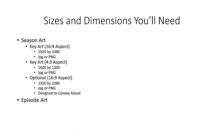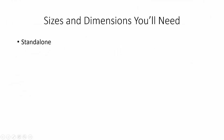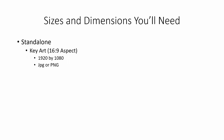You can also include artwork for individual episodes. That episode will require a key art aspect ratio of 4x3 — 1600x1200, JPEG or PNG. For standalone videos, the key art will have a 16x9 aspect ratio — 1920x1080, JPEG or PNG.